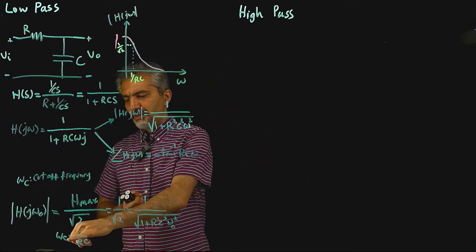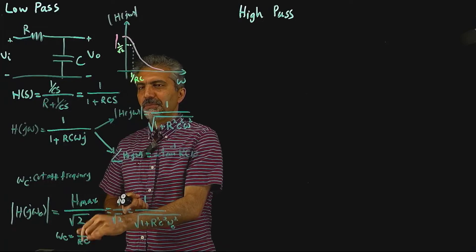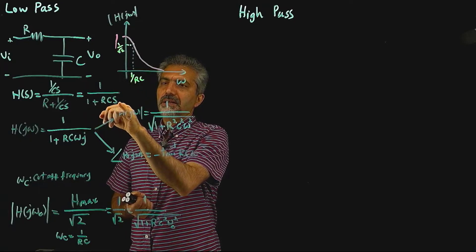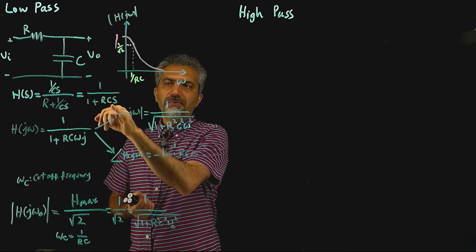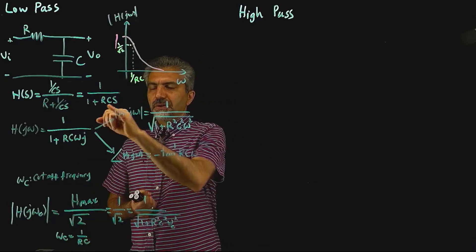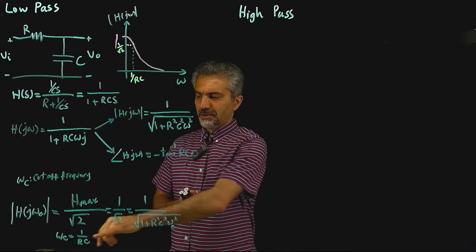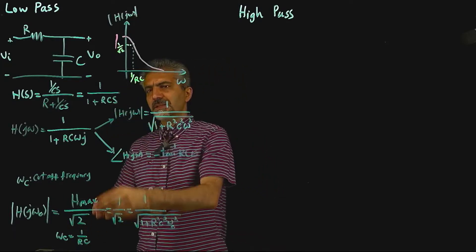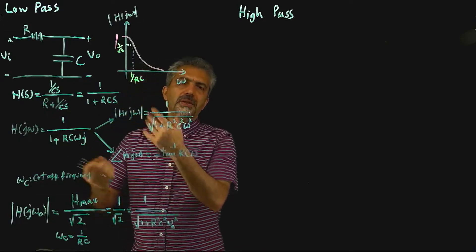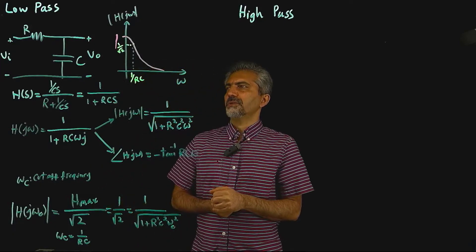ωc being 1/(RC) has another interesting meaning. If you take the denominator of H(s) and find the poles, s = −1/(RC) is the pole of that transfer function. It's not a coincidence that the cutoff frequency equals the magnitude of that pole, which is 1/(RC). This is a theme that repeats in many situations, and it's something useful to remember when you want to quickly calculate cutoff frequencies for your circuits.